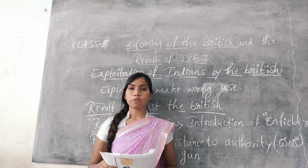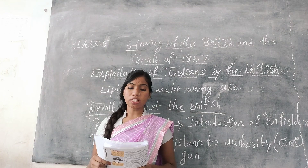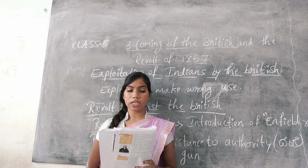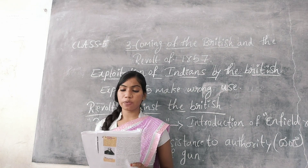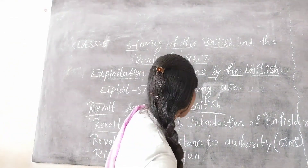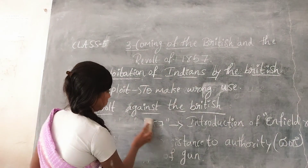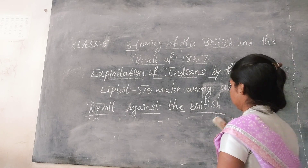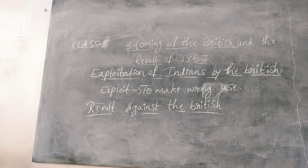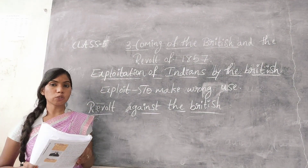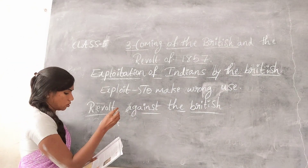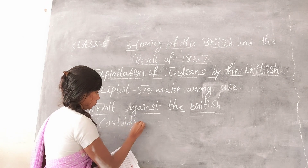The revolt was started by the Indian soldiers. The reason for the revolt was the introduction of the Enfield rifle. A rumour spread that the cartridges of the rifle were greased with the fat of cows and pigs. Cartridges means bullets.